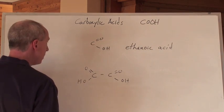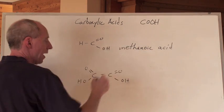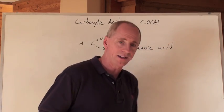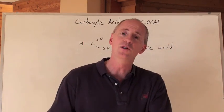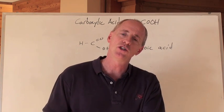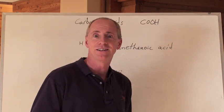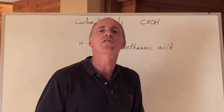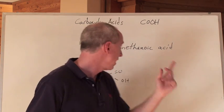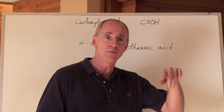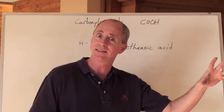With just an H on it, that's methanoic acid. You can't drink methanoic acid — it's also called formic acid. When ants bite you, they actually inject a poison which is methanoic acid. That's where the name formic acid comes from — from the word 'formica,' which means ant.